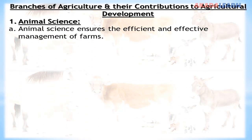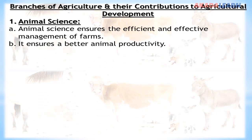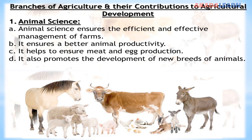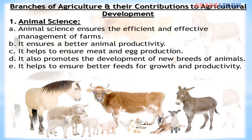Branches of agriculture and their contributions to agricultural development. Animal Science: Animal science ensures the efficient and effective management of farm animals. It ensures better animal productivity, helps to ensure meat and egg production, promotes the development of new breeds of animals, and helps to ensure better feeds for growth and productivity.